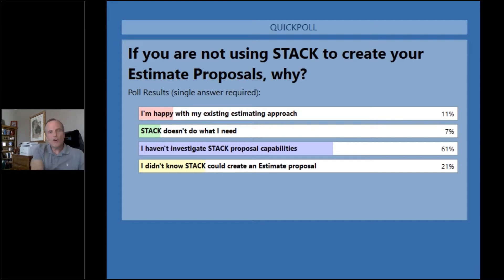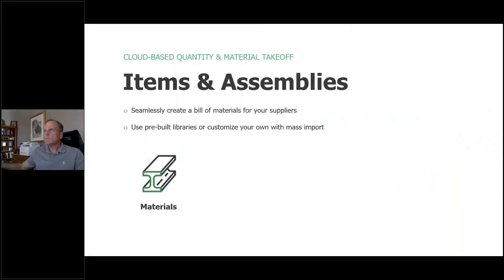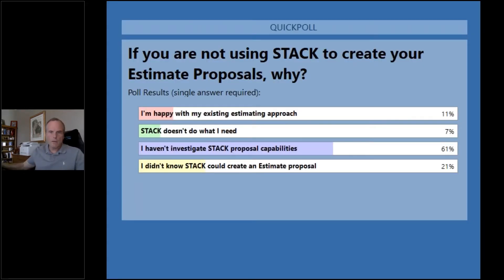What we're going to show you is that you get a set of libraries from STACK, you can also customize and create your own, and we have some very specific supplier-centric libraries you can use as well. So don't fear that you're going to have to enter all this information from scratch. Within this mechanism, we're going to look at materials, labor, equipment, and the various different types of costs that go into defining what your various takeoff items have associated with them.